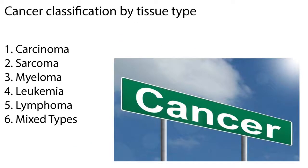Welcome to this video tutorial on cancer classification and metastasis. Cancer is a group of diseases in which abnormal cells grow and divide uncontrollably, destroying body tissue. Cancers are classified according to the type of tissue in which the cancer originates and by the primary location where the cancer first developed. Based on tissue type, cancers are classified into six major categories.